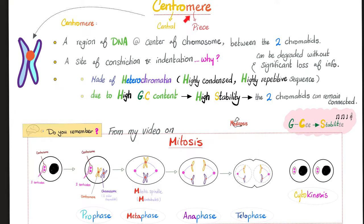The centromere is the central piece of your chromosome between the two sister chromatids, keeping them connected. The centromere is made of heterochromatin — highly condensed, highly repetitive, high GC content, meaning high stability. The two sister chromatids remain connected throughout the S phase of DNA replication. They split during the M phase when the mitotic spindle pulls them apart and the centromere splits into two halves.